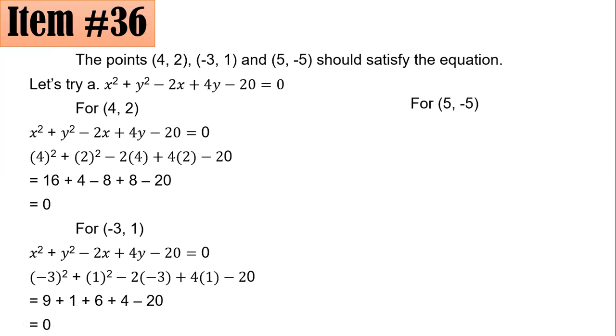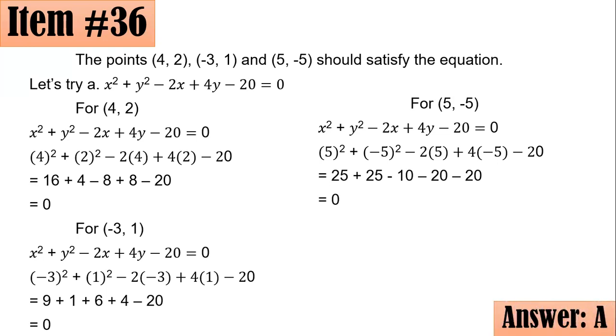For the third one, (5, -5), you will have 5² + (-5)² - 2(5) + 4(-5) - 20. Simplifying gives 25 + 25 - 10 - 20 - 20, which is again 0. So it satisfies this. Seeing that all three points satisfy option A, we are sure that A is the correct answer.